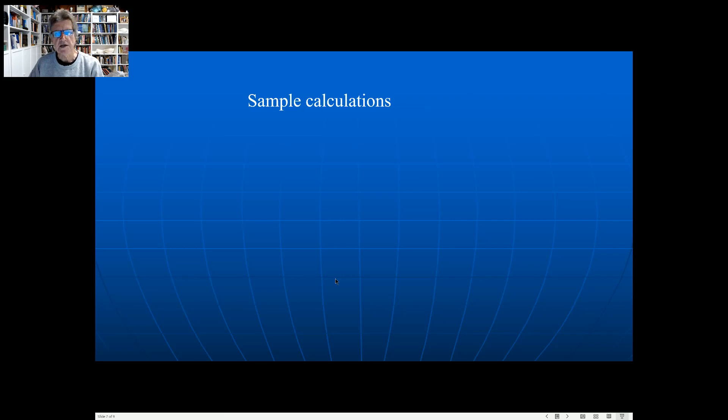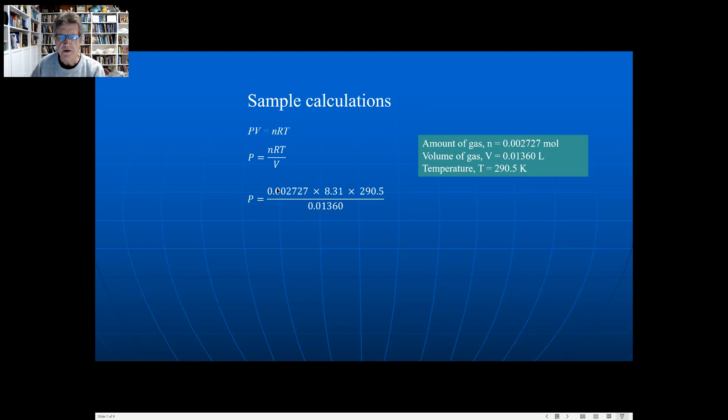Okay, let's have a look at some sample calculations. There's the gas law again, the ideal gas law. I can rearrange that because I want to calculate the pressure, so it's nRT over V. And there's the data from before, I just brought it back again. So I'm going to substitute this data into that equation. So you can see the number of moles of gas is 0.002727 and so on. So here's my substitution: 0.002727 times R, which is the gas constant, times the temperature, 290.5 Kelvin, divided by the volume which was 0.01360 liters. And if you calculate that, it comes to 484.1 kilopascals.